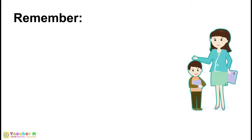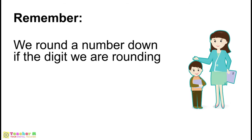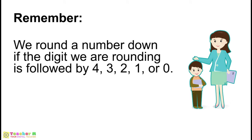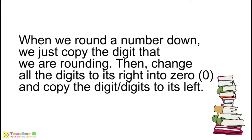Just always remember that we round a number down if the digit we are rounding is followed by 4, 3, 2, 1, or 0. Now, what will happen if we round a number down? When we round a number down, we just copy the digit that we are rounding, then change all the digits to its right into 0, and lastly, copy the digit or digits to its left.